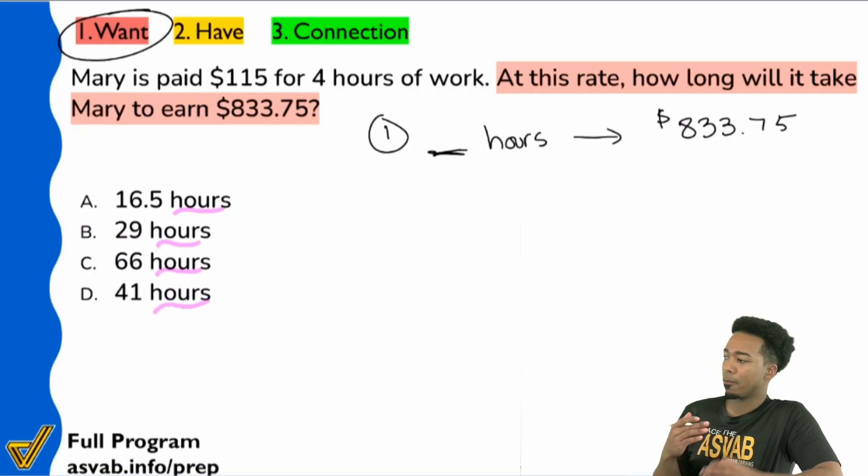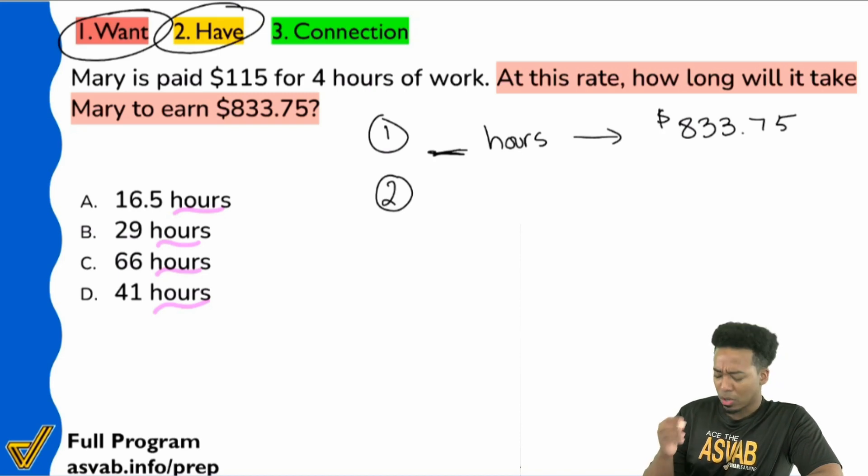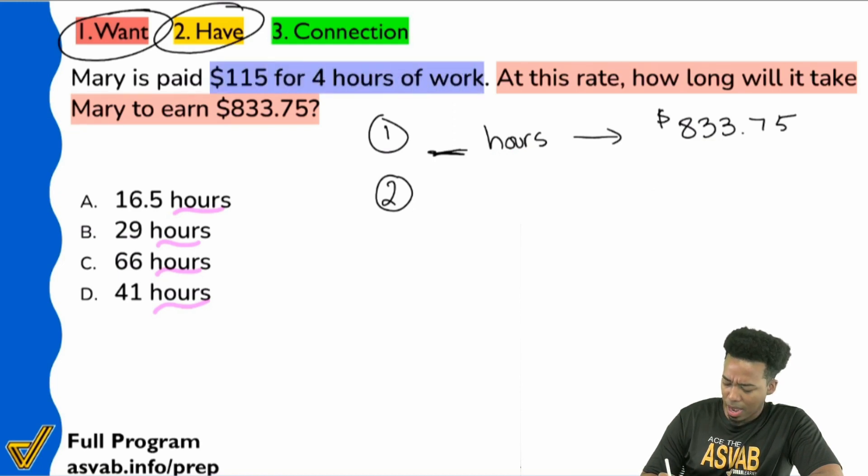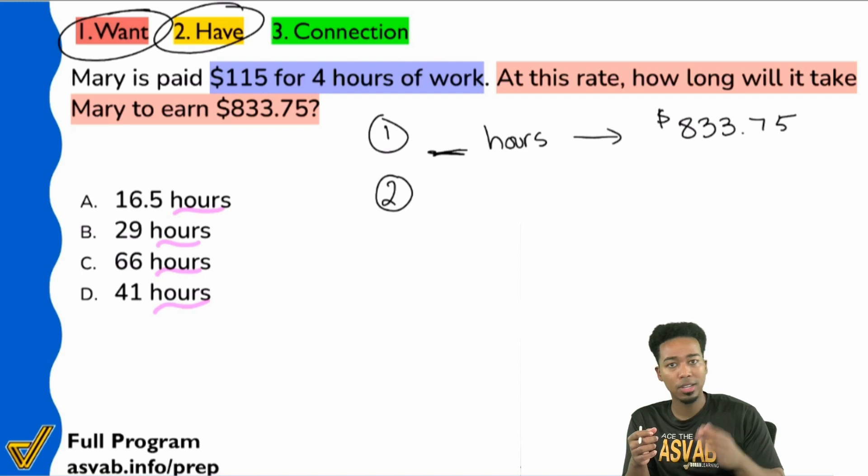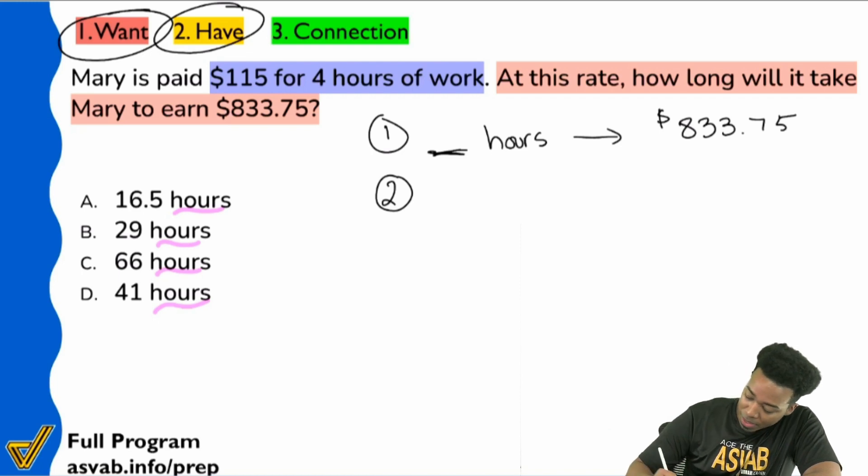So here's where we can identify what topic this is pretty quickly, almost instantaneously. When we go to step two here and look at what we have, when we write down our information, notice how in the question we're looking for the number of hours that are related to a certain amount of money. Over here in the information given to us, look at how money and hours are again related.